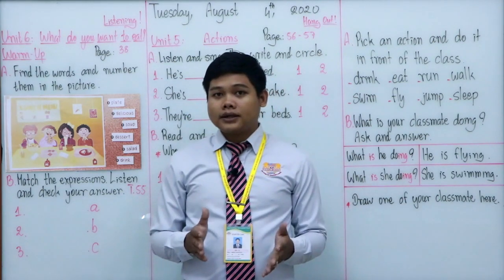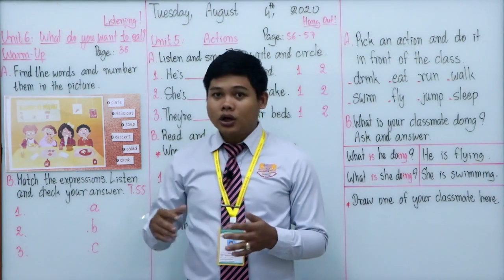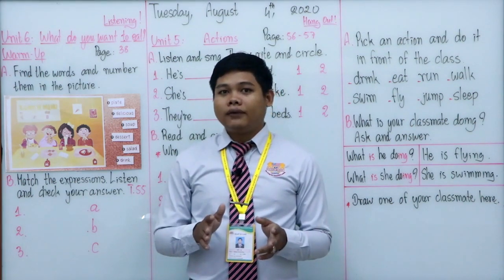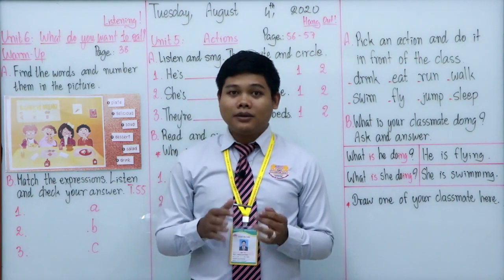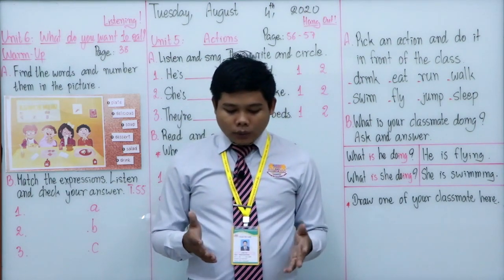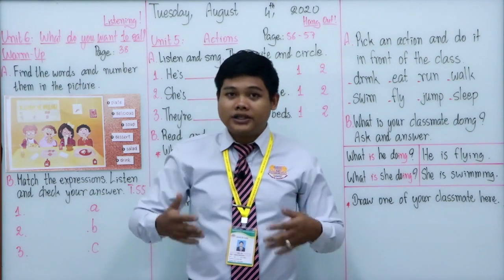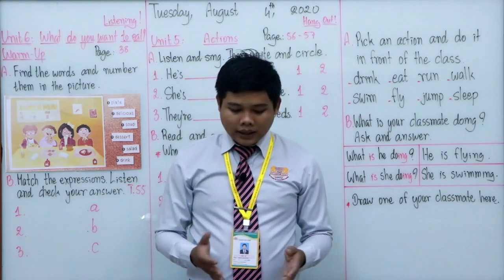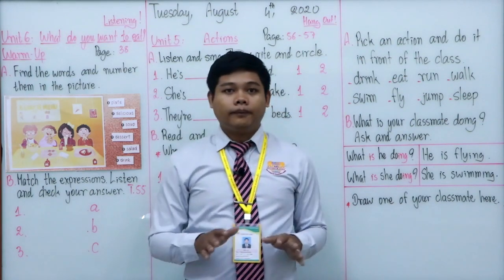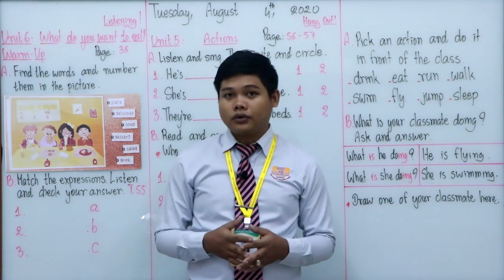Ride means you are sitting on something, like riding a horse or a bike, to move from one place to another — but it's not a machine. Drive is similar to ride, but we use a machine, like driving a motorbike or car. Sleep is when you are feeling sleepy and need rest to get energy for the next day. Farmer means the people who do farming — who grow plants or feed animals.